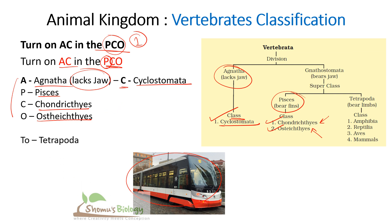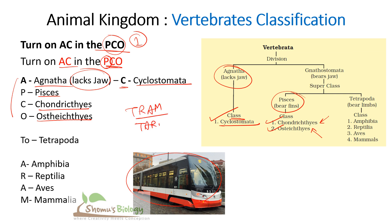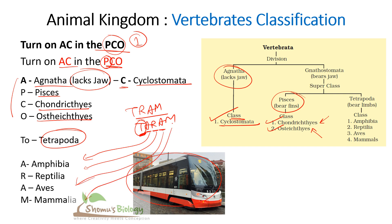After AC and PCO, use the word TARAM — a modification of TRAM. T stands for Tetrapoda (those who bear limbs); A for Amphibia; R for Reptilia; A for Aves; and M for Mammalia. So with 'Turn on AC in the PCO' and 'TARAM,' you can easily remember all vertebrate classifications: Agnatha, Cyclostomata, Pisces (Chondrichthyes and Osteichthyes), Tetrapoda, Amphibia, Reptilia, Aves, and Mammalia.